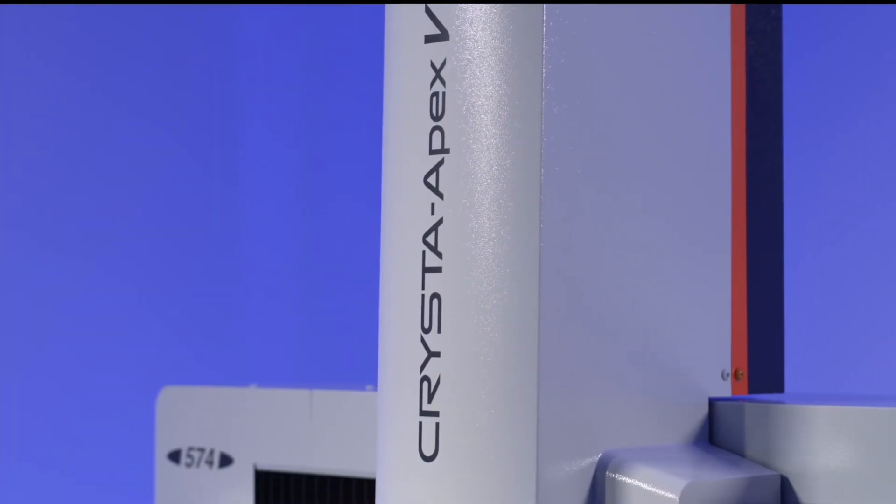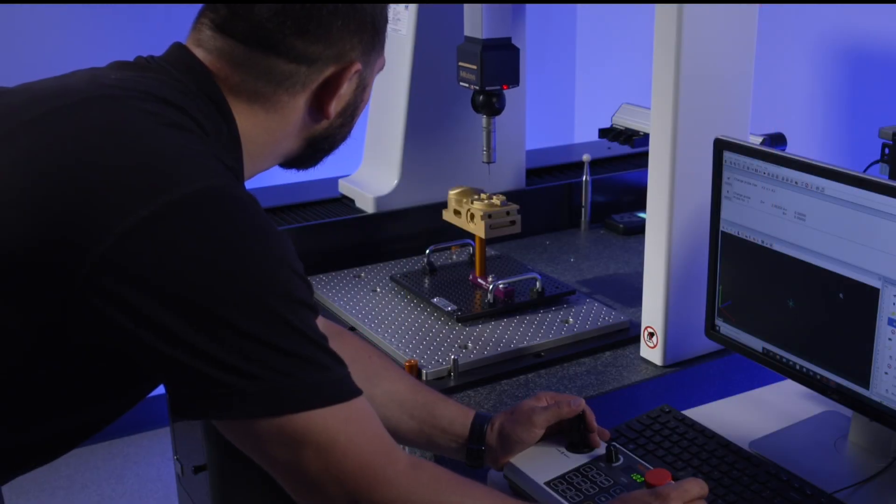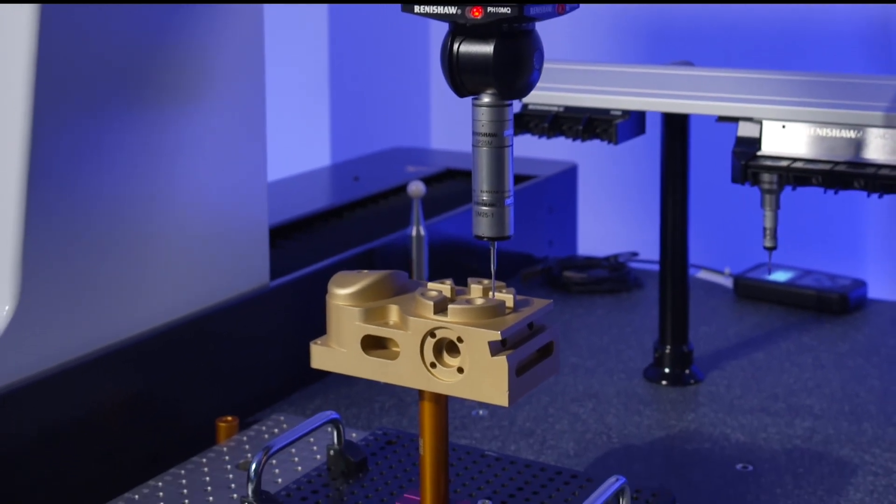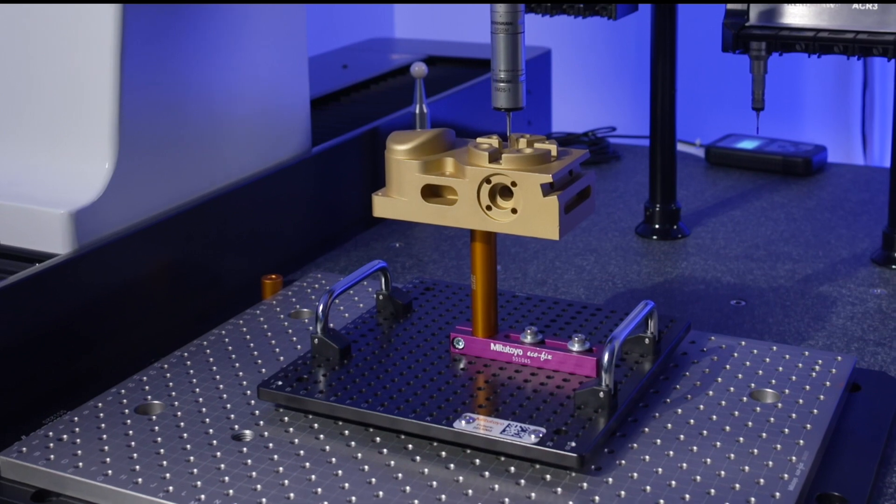Mitutoyo's newly designed Absolute Digimatic Scale, or ABS, is incorporated into the Krista Apex-V and not only provides faster measuring cycles and flexibility, but also improved durability for harsh environments.